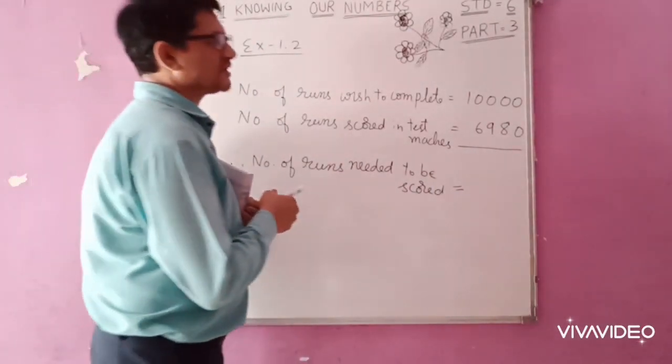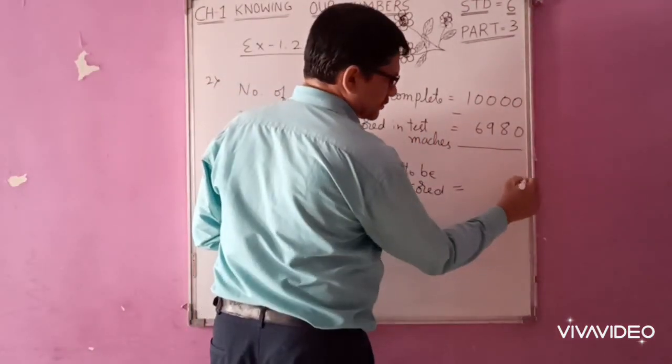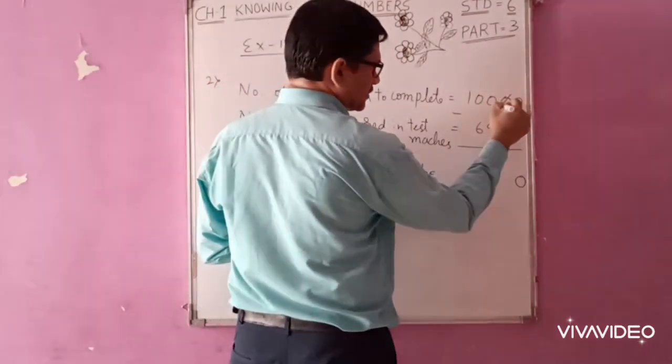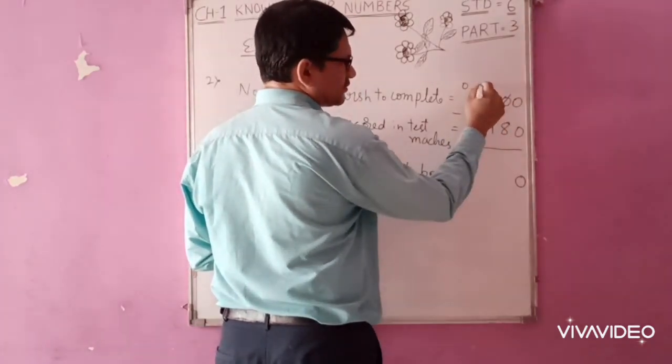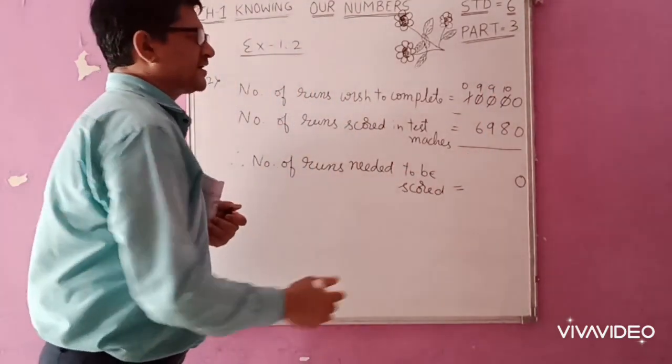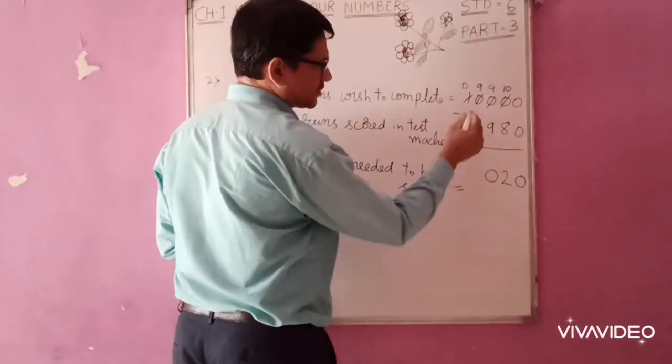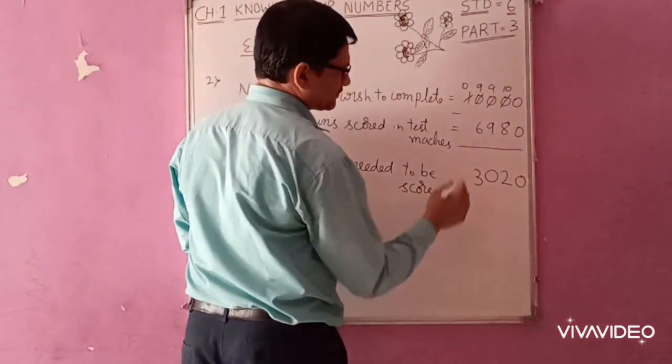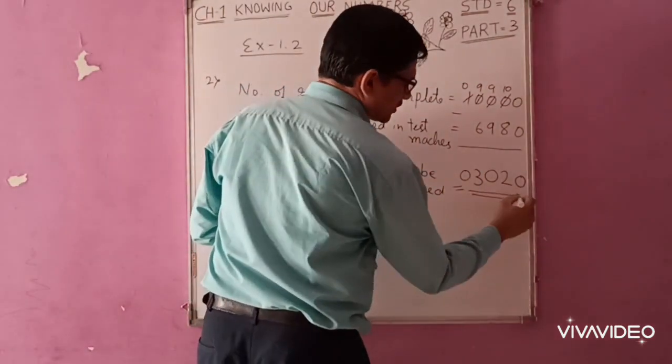So here you are going to subtract. 0 minus 0, 0. So here, 0 minus 8, not possible. Carrying from here, not possible. 1, 0, 9, 9. And here, 10. 10 minus 8, 2. 9 minus 9, 0. 9 minus 6, 3. 0 minus 0, 0. Therefore...